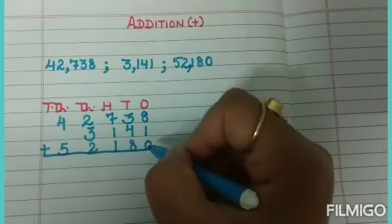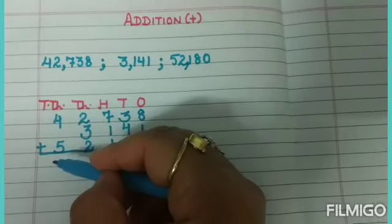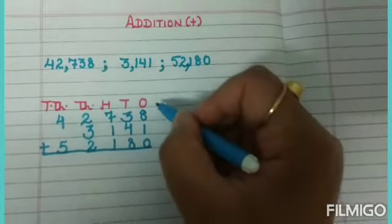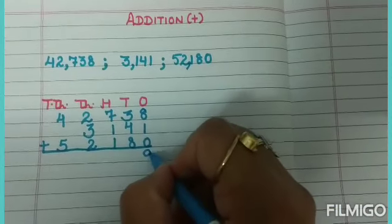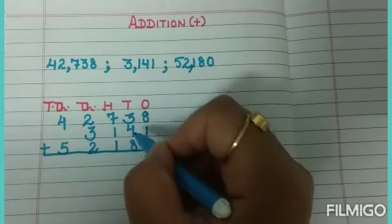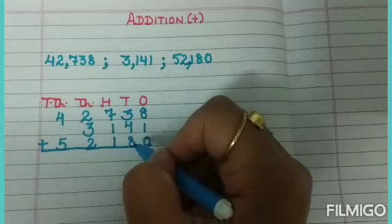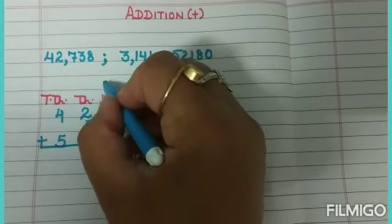Start adding from ones place. Addition always starts from ones place. 8 plus 1 equals 9, 9 plus 0 equals 9. 4 plus 3 equals 7, 7 plus 8 equals 15. Write 5, carry over 1.